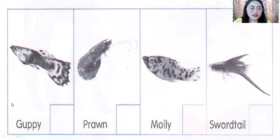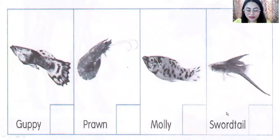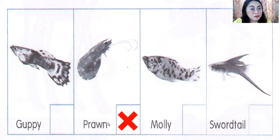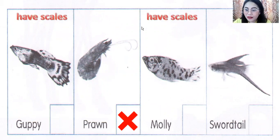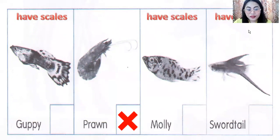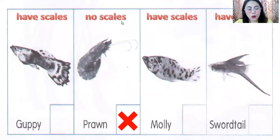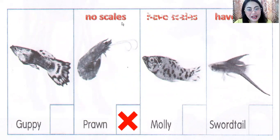Next, we have guppy, prawn, molly, and swordtail. Which animal does not belong in the group? The answer is prawn, because guppy, molly, and swordtail have scales, while prawn has no scales.